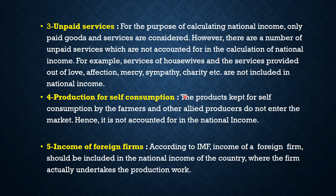Number 4: production for self-consumption. For example, if I am producing any commodity for consuming and not selling it in the market, how can we know the value of that commodity? Whatever commodity is produced for self-consumption is not included in the national income. The production kept for self-consumption by farmers and other allied producers does not enter the market, hence it is not accounted for in the national income.